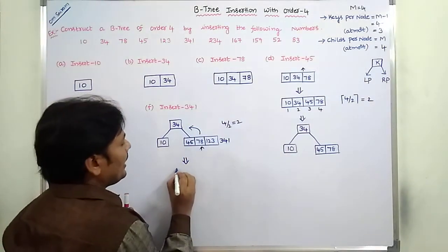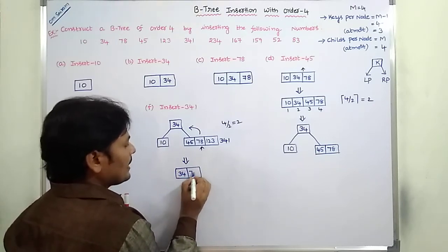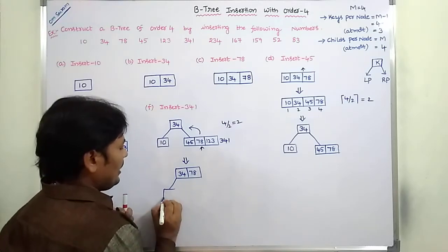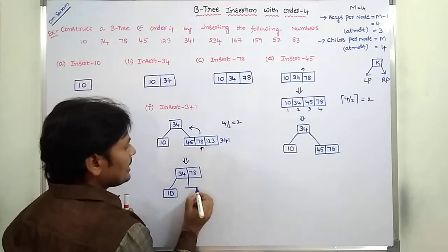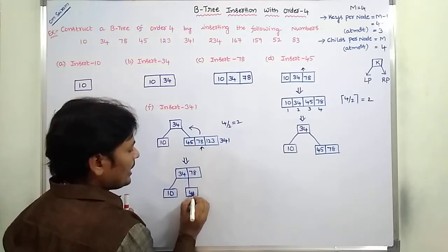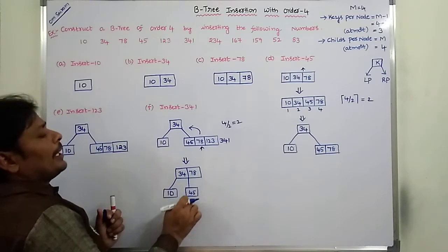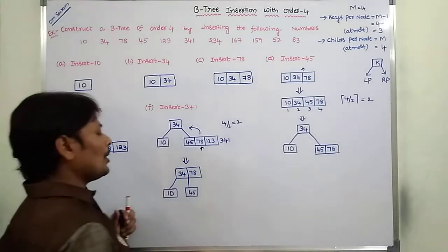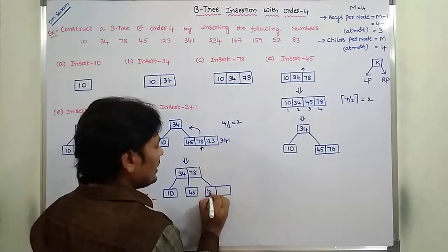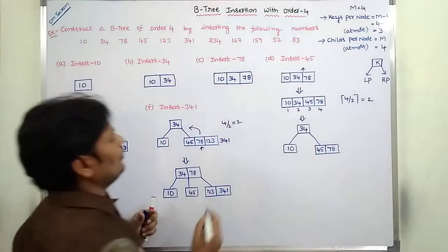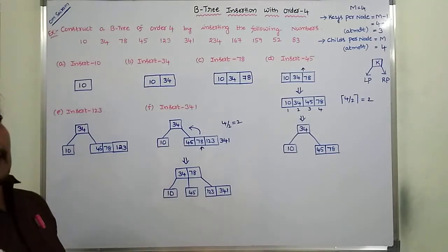After adding 78 to the root, the root node now contains 34 and 78. The left child is 10, the middle child is 45, and the right child contains 123 and 341. This is the B-tree after inserting 341.